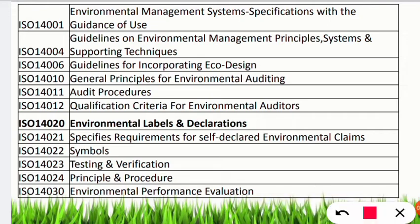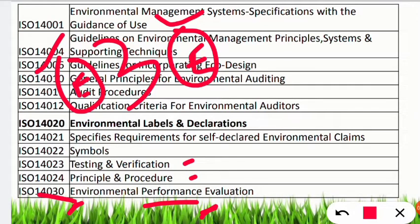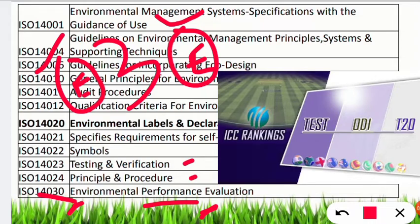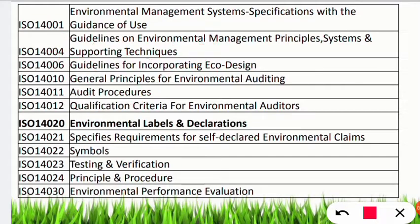ISO 14031 is for environmental performance evaluation — EPE. Remember 'EE' from environmental and evaluation, visualized inside the zero. The '3' stands for performance across three formats — Test, One Day, and T20 — so a cricketer performing in all three formats is the highest performer. That's why 14031 represents environmental performance evaluation.